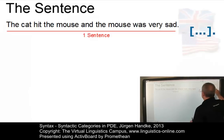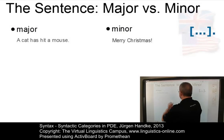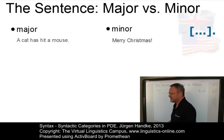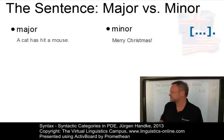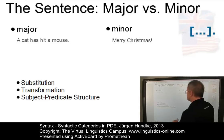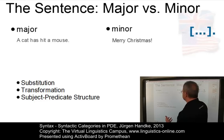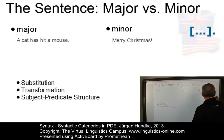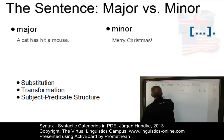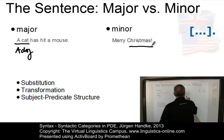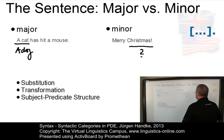A distinction between major sentences and minor sentences. Here you have two examples. A major sentence: A cat has hit a mouse. And a minor sentence: Merry Christmas. We have three criteria that can distinguish major and minor sentences. For example, the substitution test. In a major sentence, we can easily substitute a cat by a dog, whereas in Merry Christmas, hardly anything can be substituted.